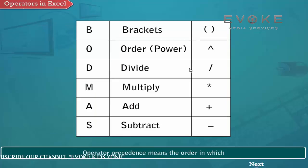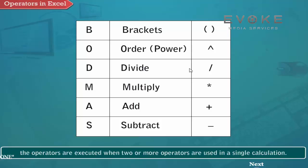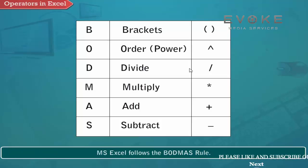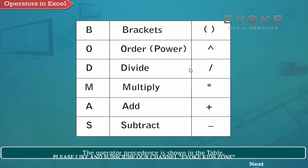Operator precedence. Operator precedence means the order in which the operators are executed when two or more operators are used in a single calculation. MS Excel follows the BODMAS rule. The operator precedence is shown in the table.